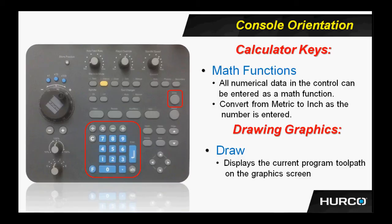Next, we have the draw button. It's located in the small red square here on this slide. This button is used to execute whatever geometry has been programmed up to a given point when it's depressed. If you have a single screen control, this is going to simply be displayed on the main screen of the control. If you have a dual screen, it will appear on the right-hand screen.